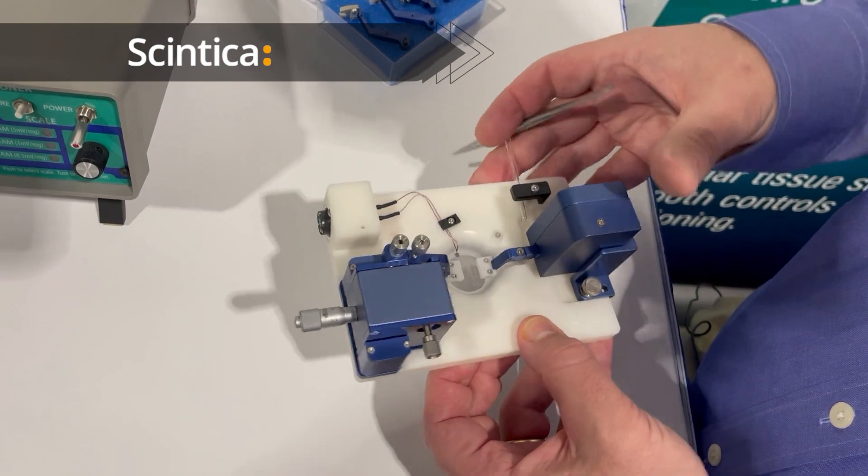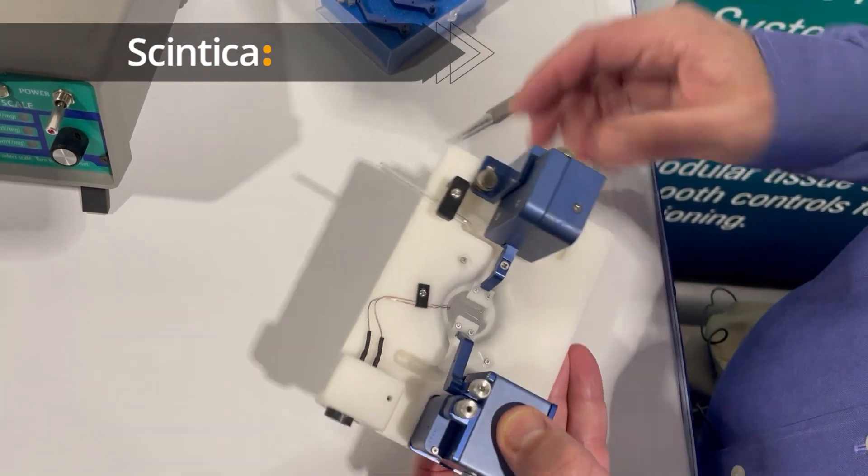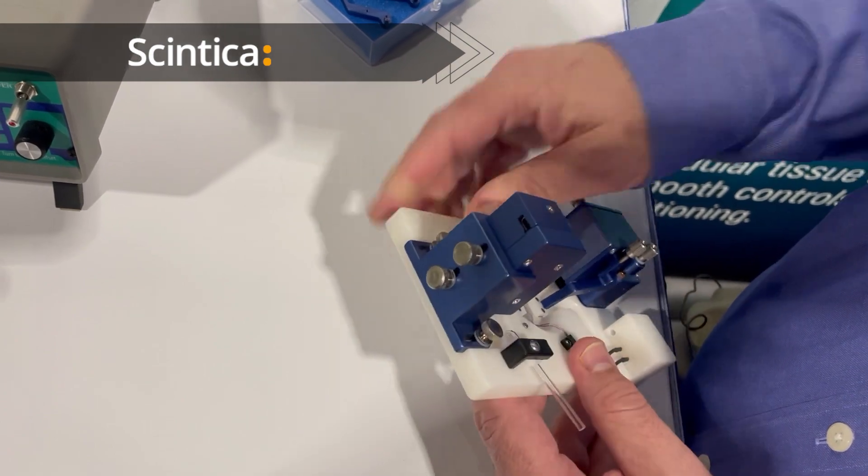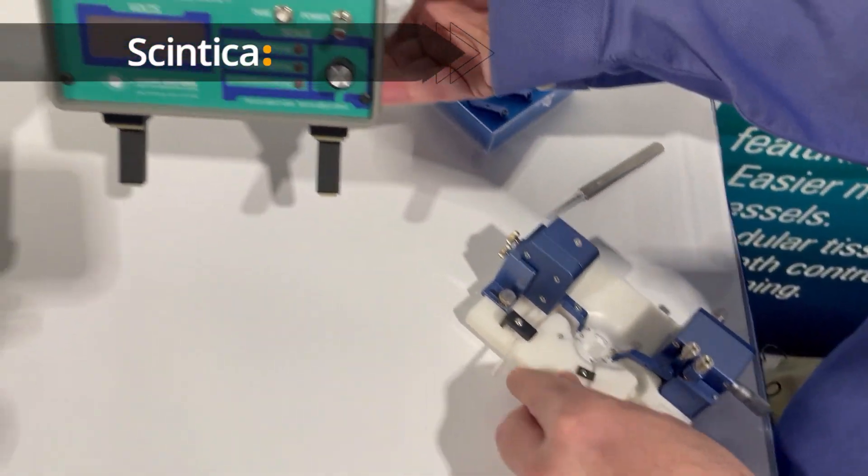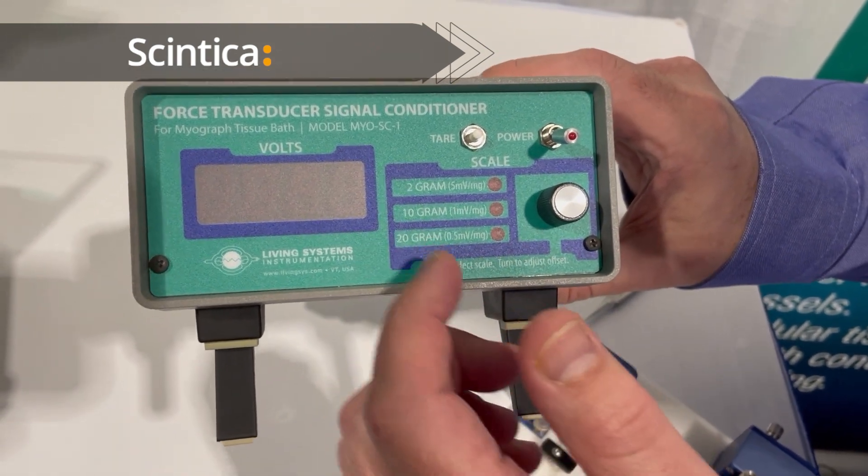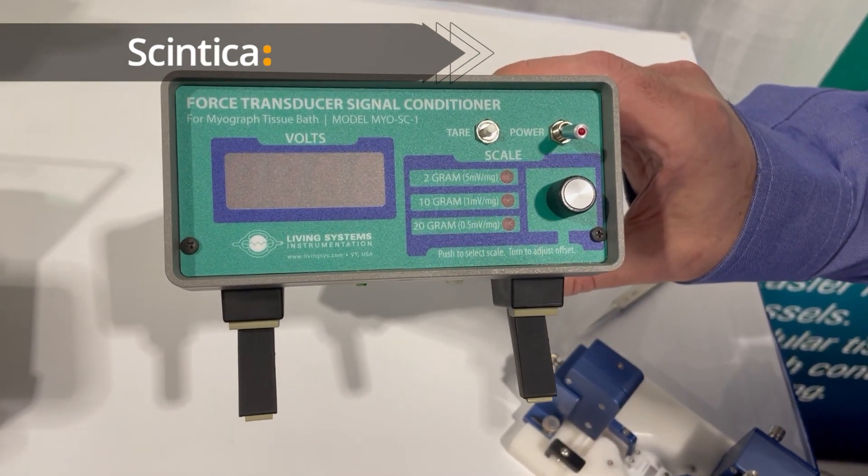The force transducer gets connected by a cable to the signal conditioning unit here. And this is where you adjust the sensitivity that you want to study. We have a 2 gram setting, 10 gram setting, and a 20 gram setting. Those are the full scale outputs.